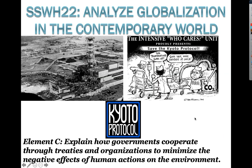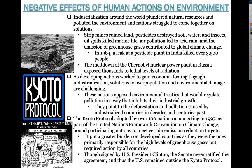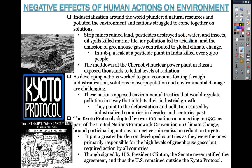Now looking at Element C: explain how governments cooperate through treaties and organizations to minimize the negative effects of human actions on the environment. Industrialization around the world plundered natural resources and polluted the environment, and nations have struggled to come together on solutions. Strip mines ruin land, pesticides destroy soil, water, and insects, oil spills kill marine life, air pollution has led to acid rain, and emission of greenhouse gases has contributed to global climate change.